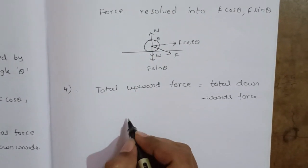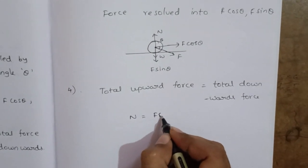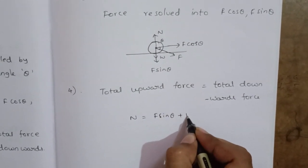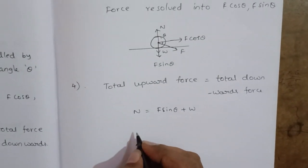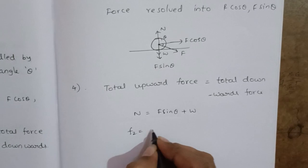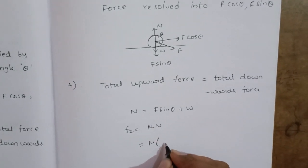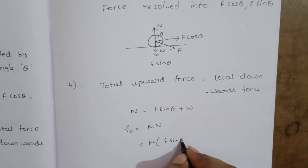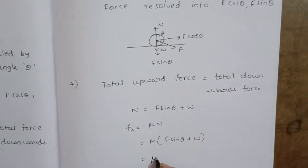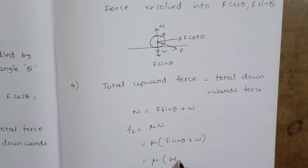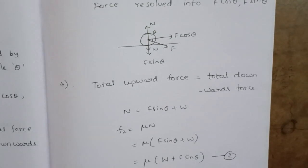In the pushing case, the total upward force N equals the total downward force F sin theta plus W. So N = F sin theta + W. The friction force F2 = μN = μ(W + F sin theta). This is equation 2.